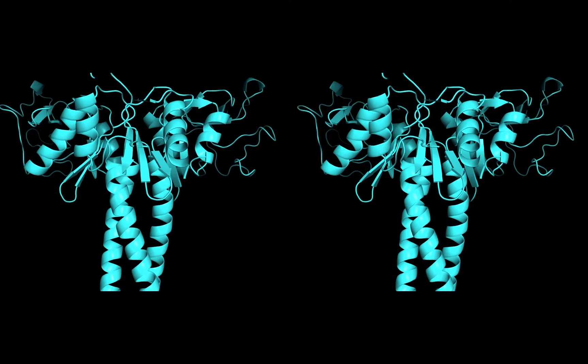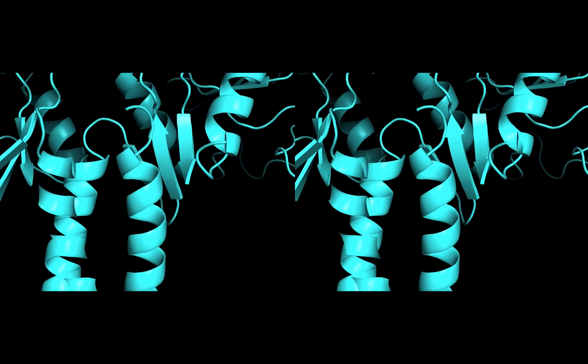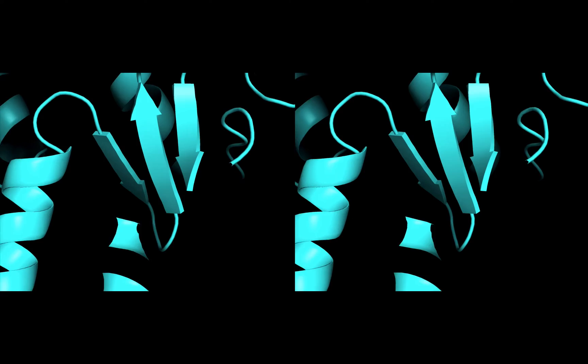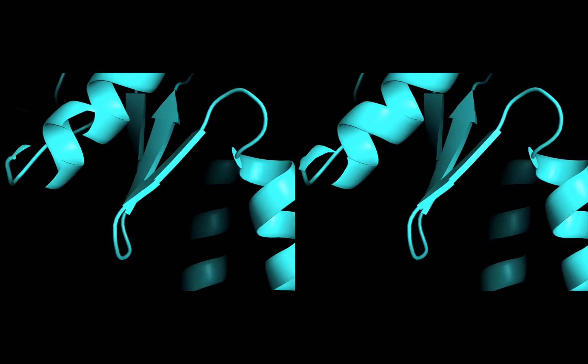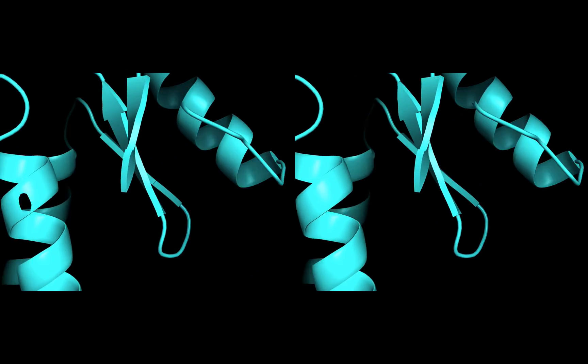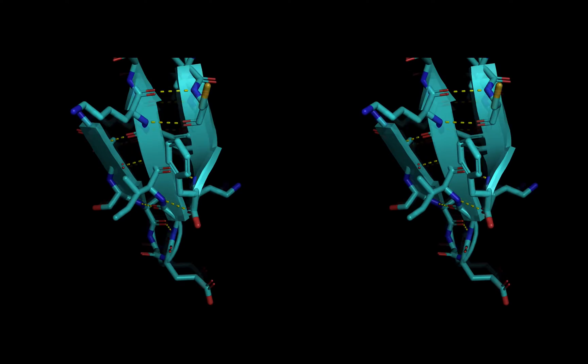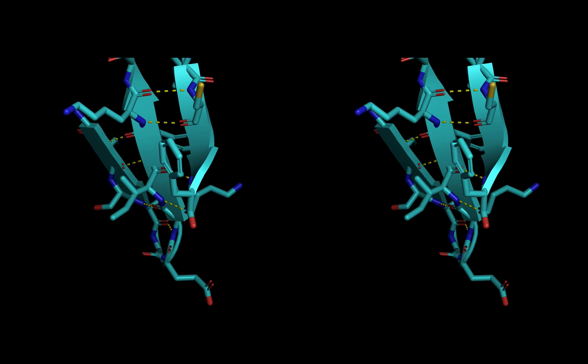Let's look at this beta sheet in a little more detail. Suppose we want to prove to ourselves there are strategically located hydrogen bonds that stabilize this beta sheet and hold the structure together. It's advantageous to zoom in and show the stick rendering overlaid on the ribbon diagram.